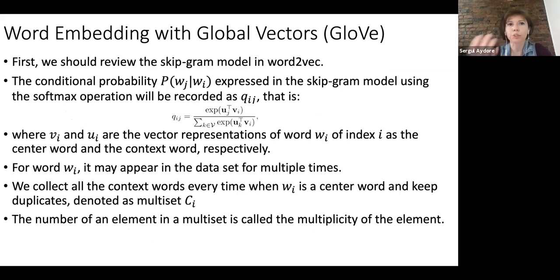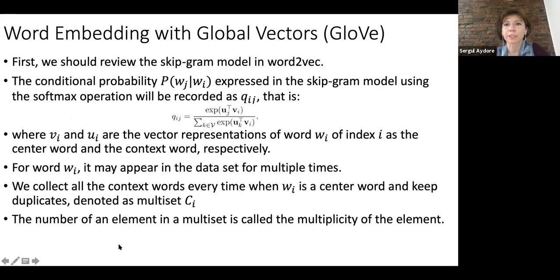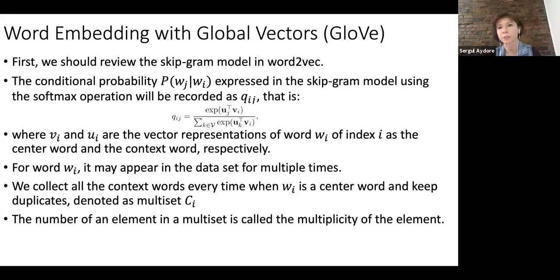Another word embedding approach is GloVe, which stands for Global Vectors. First let's review the skip-gram model: the conditional probability of wj given wi, expressed using the softmax operation, can be recorded as qij. Here v's and u's are the vector representations of word wi with index i — v is the central word representation and u is the context word representation. For word wi appearing multiple times in the dataset, we collect all context words every time wi is a center word, keeping duplicates, and denote them as a multi-set ci.